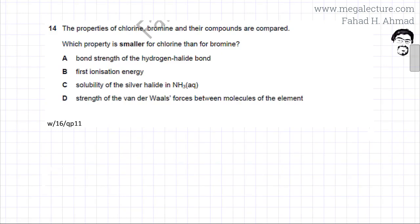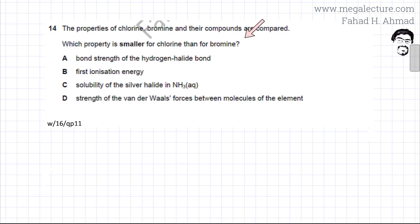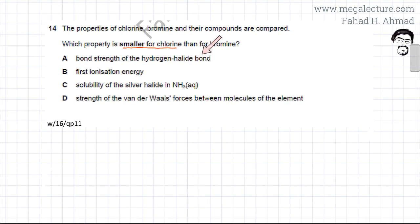The question asks us to compare properties of chlorine, bromine, and their compounds, and identify which property is smaller for chlorine than for bromine. So whatever property we are discussing has to have a smaller value for chlorine. Let's look at the options — the first one is the bond strength of the hydrogen halide bond.